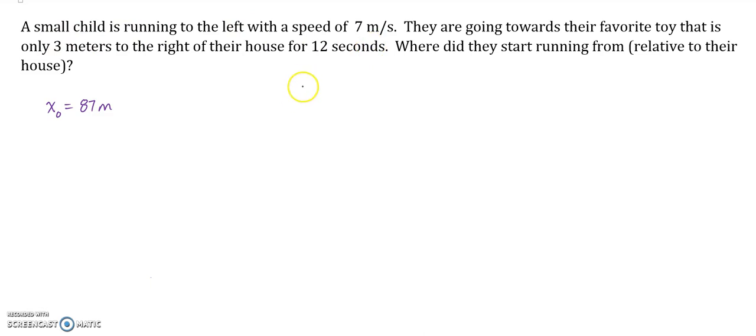So we've got a child running to the left. There's a child - look, it's a dot. They're running to the left at seven meters per second. So that's my velocity. They're going towards their favorite toy which is only three meters to the right of their house. We're coming at it, so their house is over here. Look at that house.